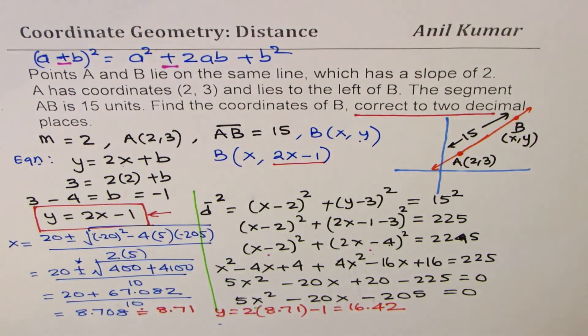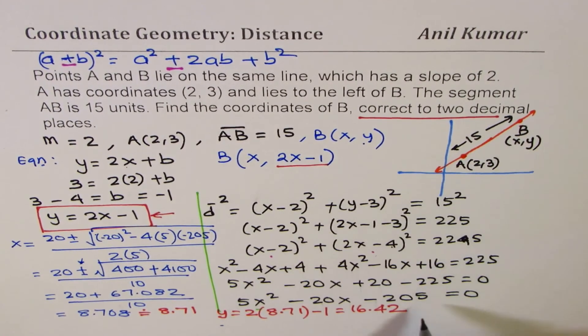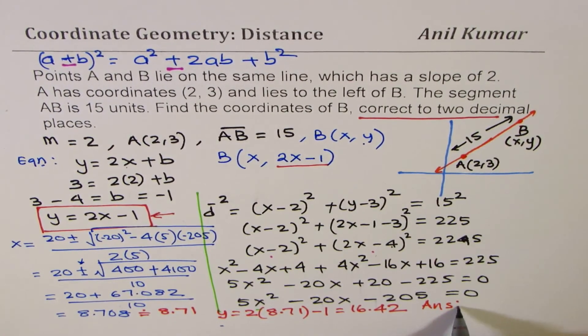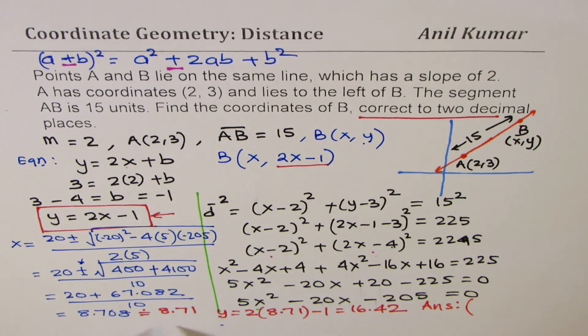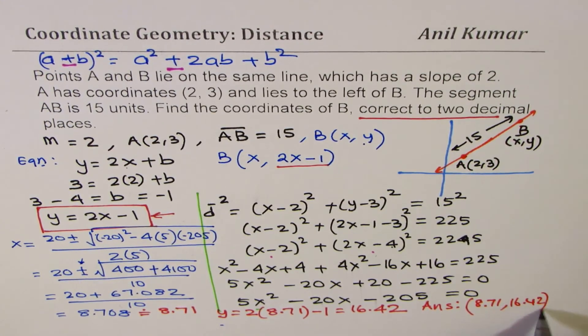So, that is how we are going to get the y value. So, coordinates of point B are, we can write down our answer, are (8.71, 16.42). Is that clear?